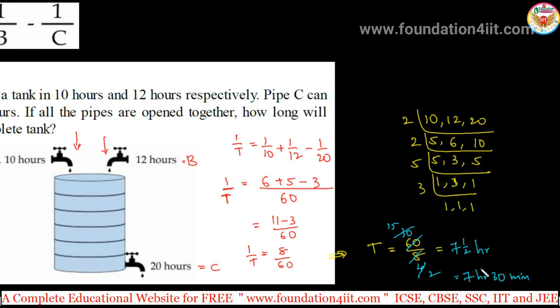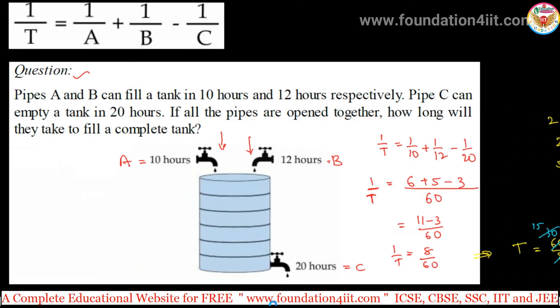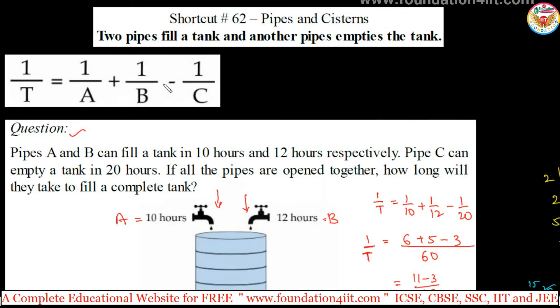According to the options, we can find the correct answer. The concept is: whether it's two, three, or any number of pipes, those that are filling you take as positive by reciprocal, and those that are emptying you take as negative. For example, if one more tap is emptying, you can take minus 1/T. This is the concept you apply in pipes and cisterns.